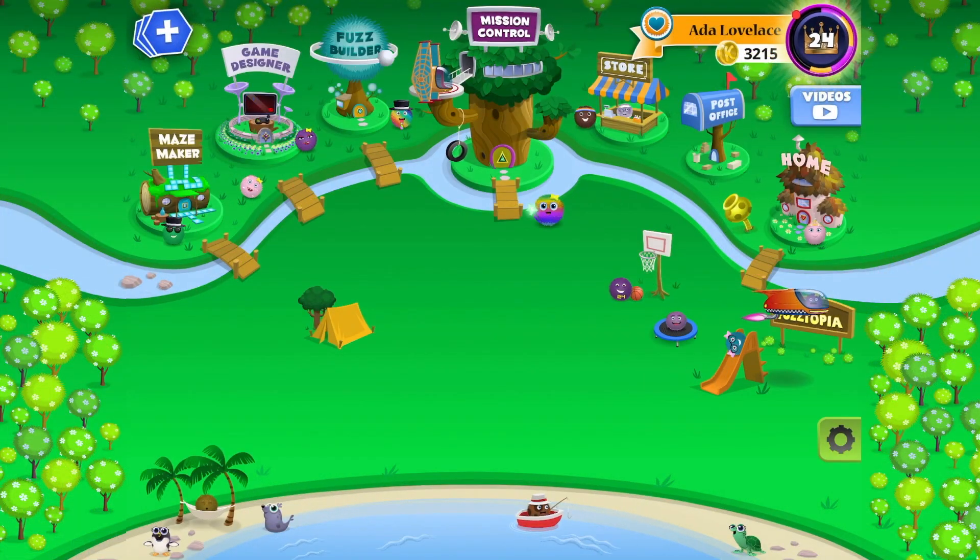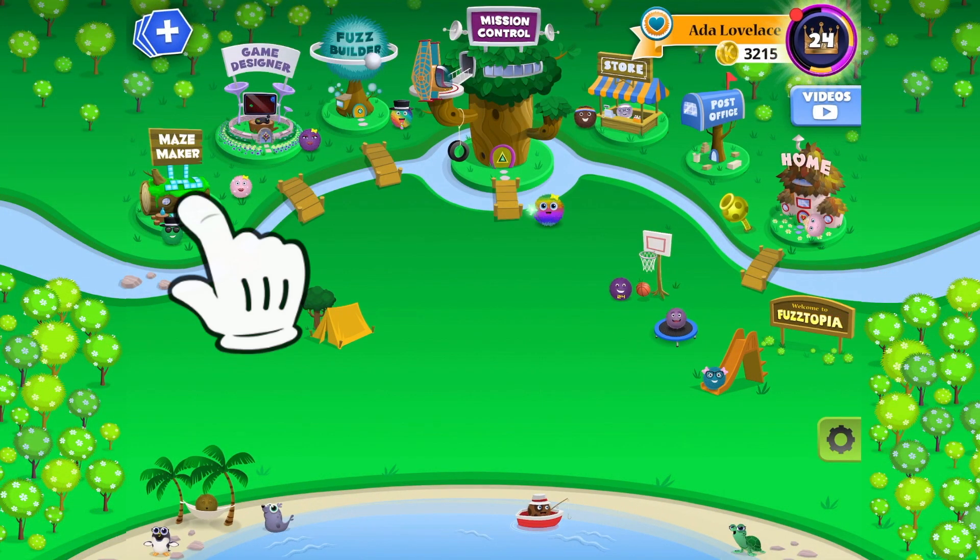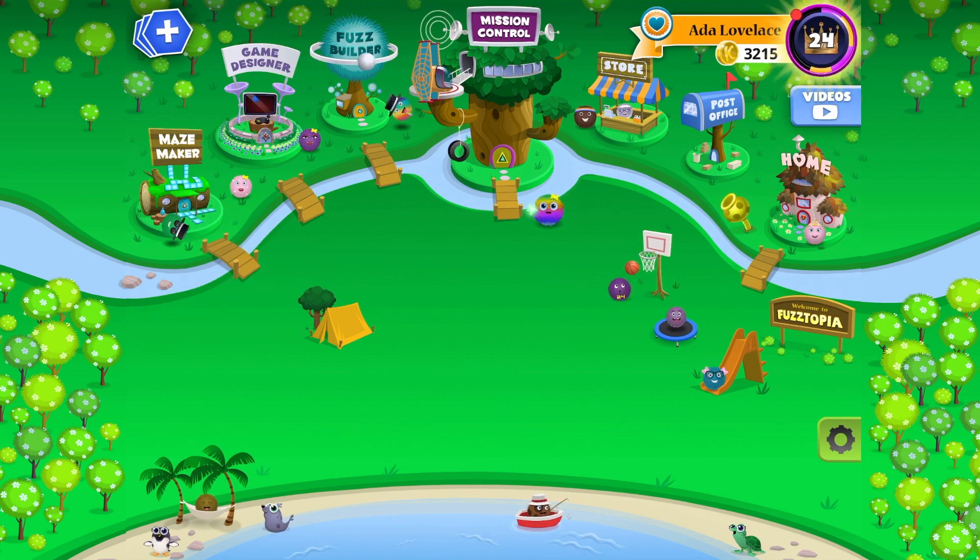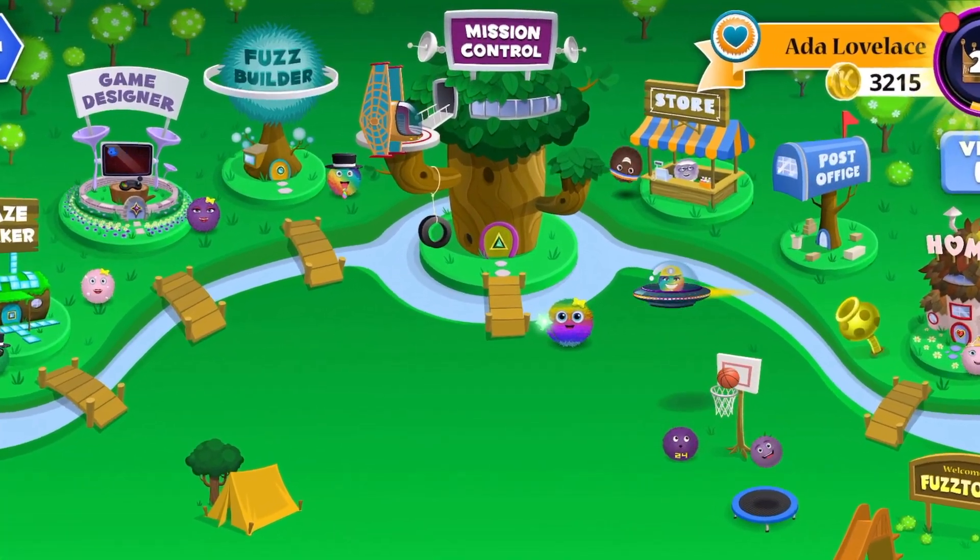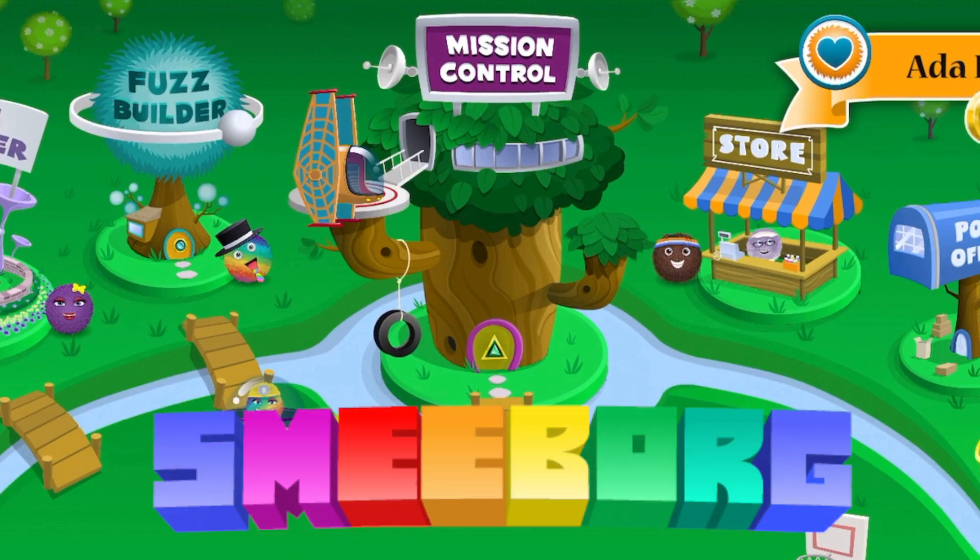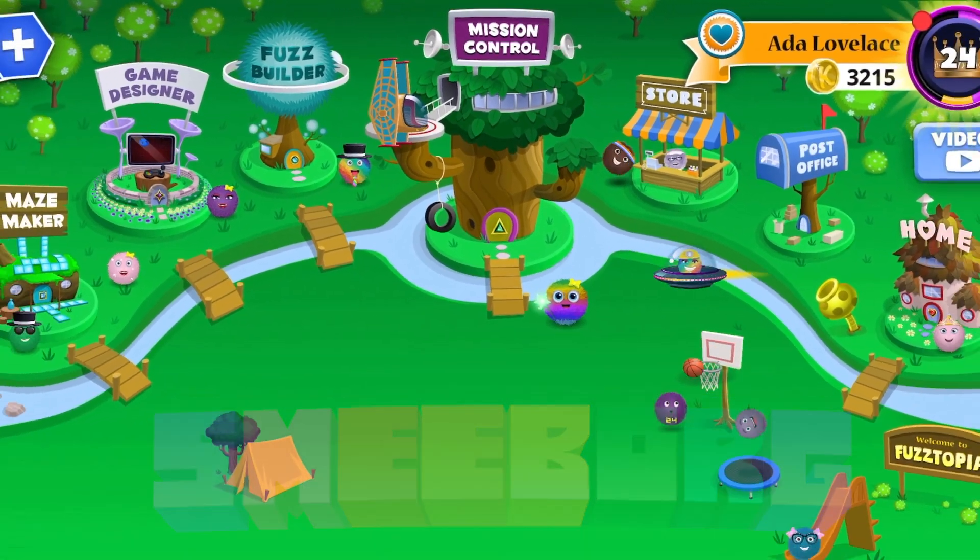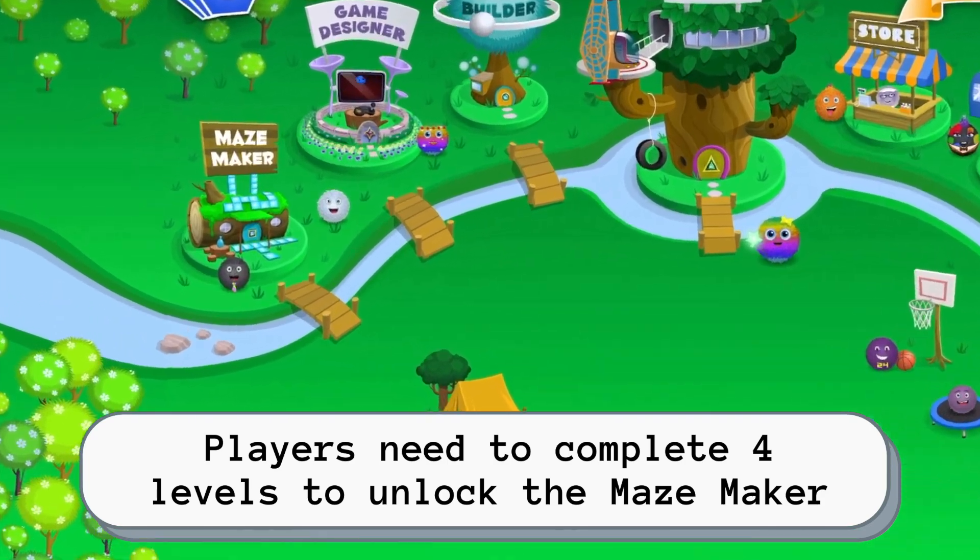Step two, log into Codable. If you've already unlocked the Maze Maker, you can go straight there. But if you're brand new to Codable, make sure you start on Planet Smeborg. Players need to complete at least four levels to learn about sequence and unlock the Maze Maker.